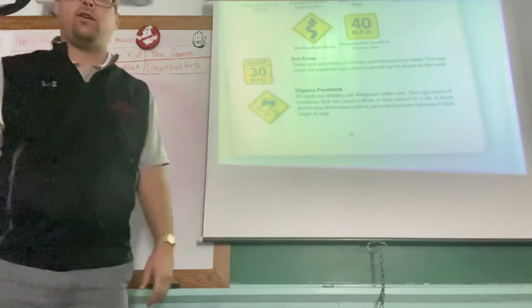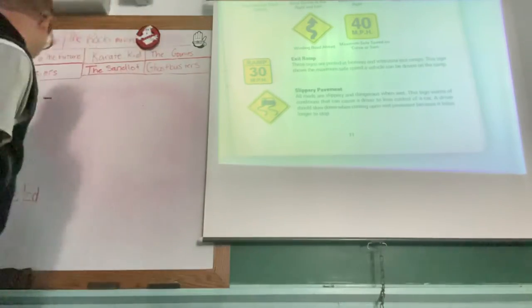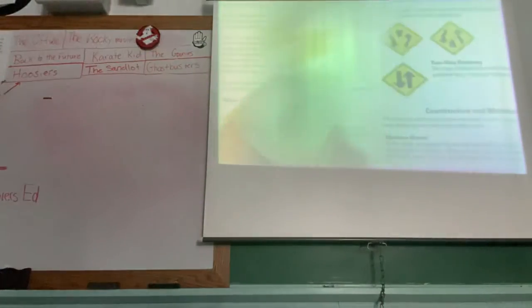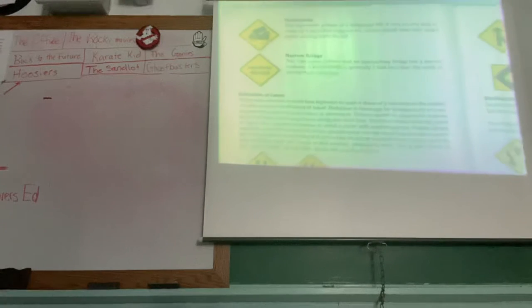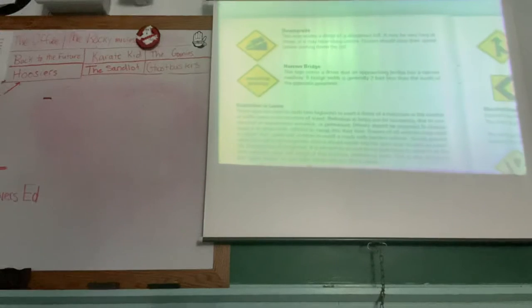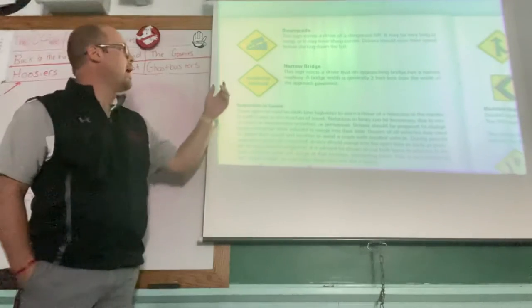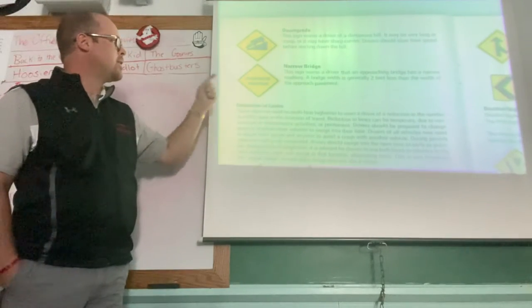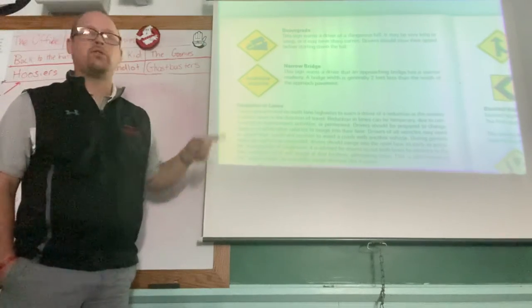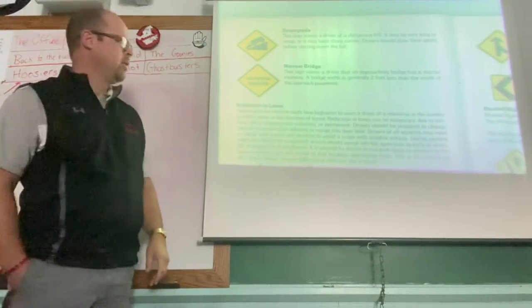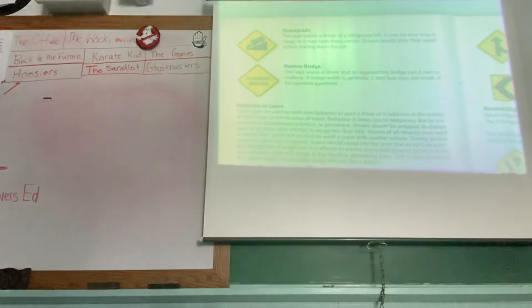On the bottom of page 71, where the car looks like it's turning into a jellyfish, is slippery pavement. Page 72, the top of page 72, is not steep hill, it's downgrade. The sign that says narrow bridge means the bridge is narrow. A lot of them are what they say they are.